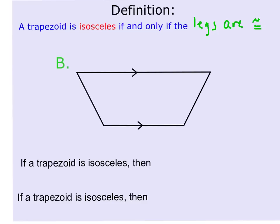What you need to know is that the legs are the non-parallel sides and we call the parallel sides the bases. When we're talking about an isosceles trapezoid, it's really important that you know the parallel sides are called bases and the non-parallel sides are called legs.